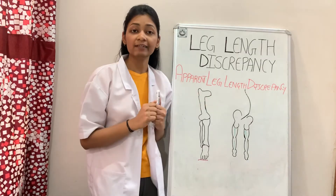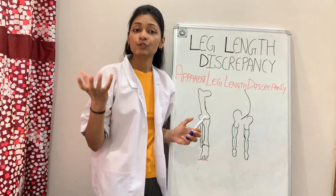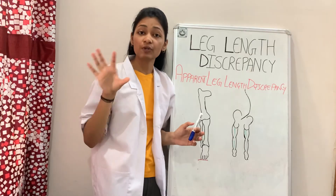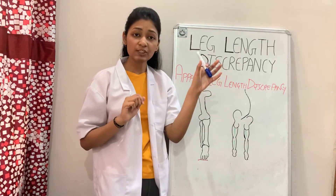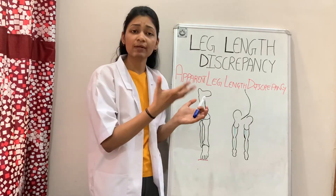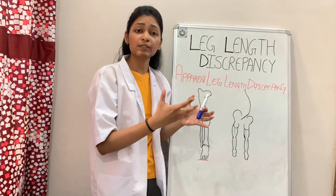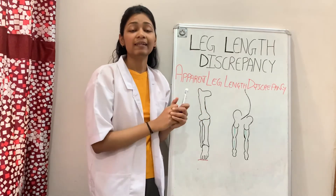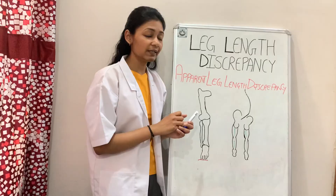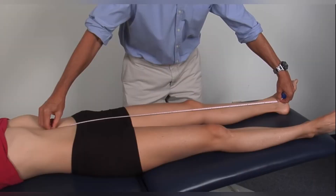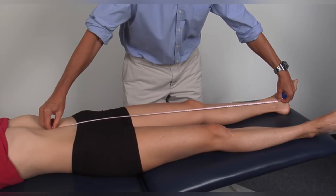To summarize: in true leg length discrepancy there is deformity in the structure of the bony component, but in apparent leg length discrepancy there is no fault in the bony structure of the lower limb — instead there may be muscle contracture or a pathology to which the patient has adapted. To measure apparent leg length discrepancy, start from the umbilicus or the xiphoid process down to the medial malleolus, measure both legs, and check if there is any difference in the results.